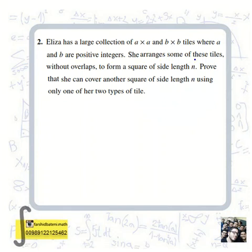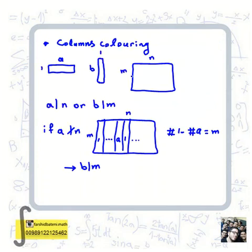She arranges some of these tiles without overlaps to form a square of side length n. Prove that she can cover another square of side length n using only one of her two types of tile.